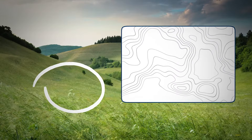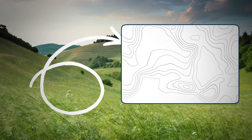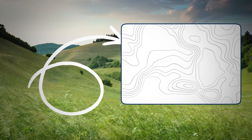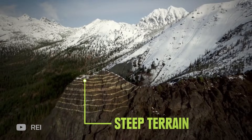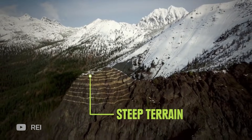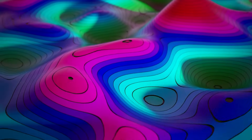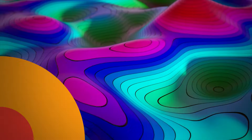Widely spaced lines show gradual slope changes or flat areas. And closely spaced lines show steep slopes, cliffs, or significant elevation changes.